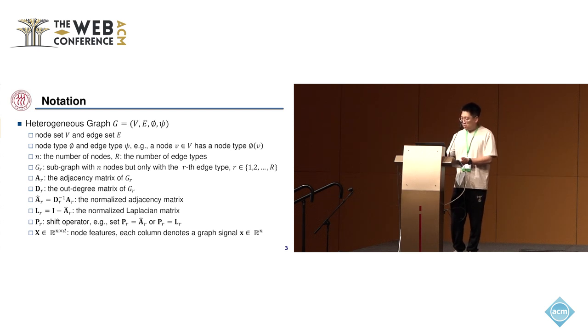Following previous work, we use G_r to denote the subgraph with n nodes, but only with the r-th edge type. Then we use A_r to denote the adjacency matrix of this subgraph G_r, and D_r to denote its out-degree matrix.